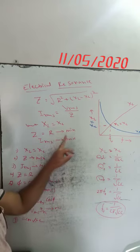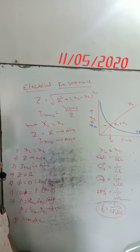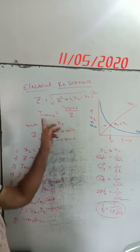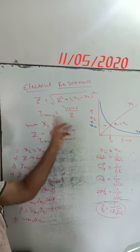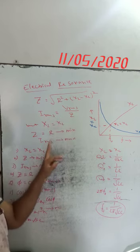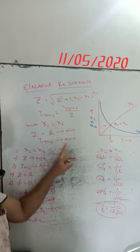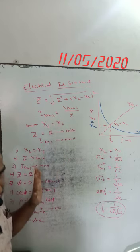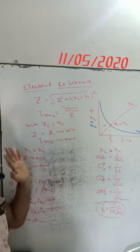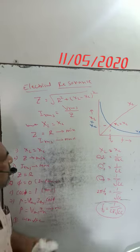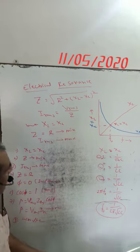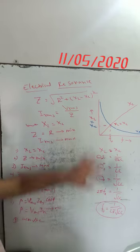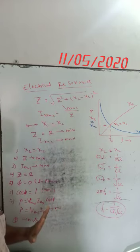So impedance becomes minimum and the impedance in the LCR circuit equals the resistance of the resistor. Z equals R is minimum. When Z is minimum, since I_RMS and Z vary inversely, the current in the circuit becomes maximum. That circuit is called a resonance circuit and this phenomenon is known as electrical resonance.